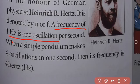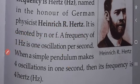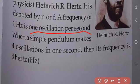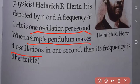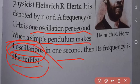One oscillation per second is called one hertz. For example, when a simple pendulum makes four oscillations in one second, its frequency is four hertz.